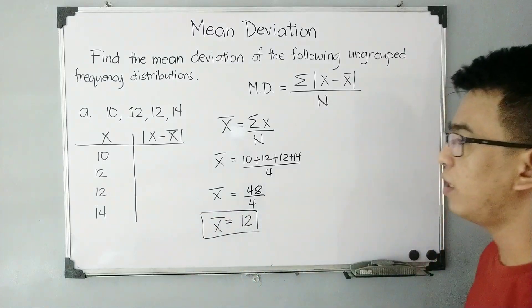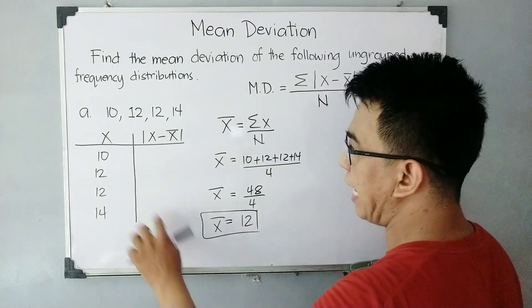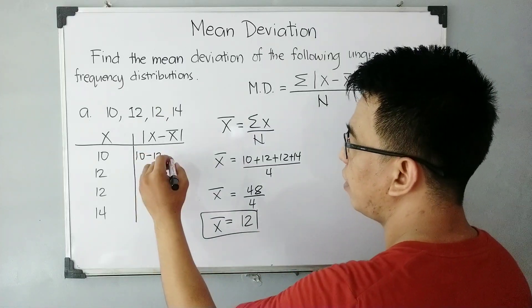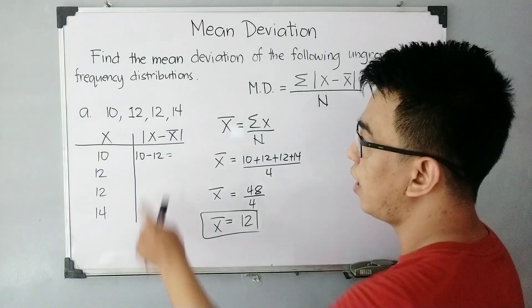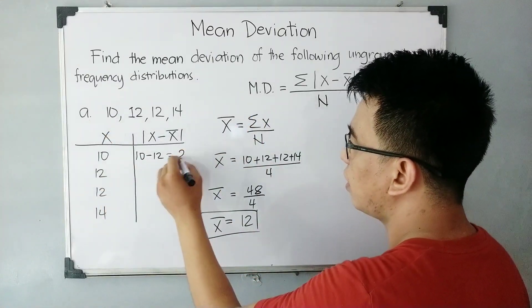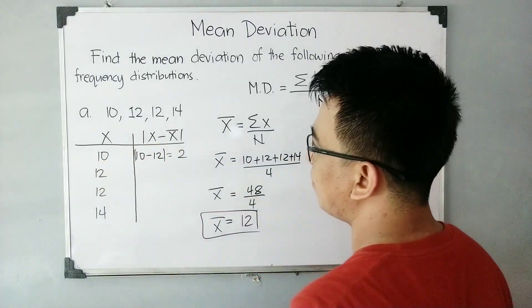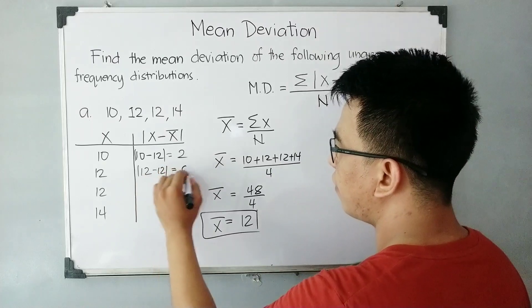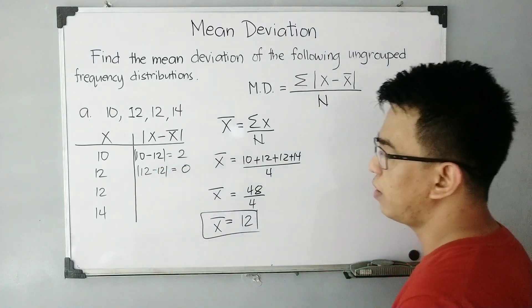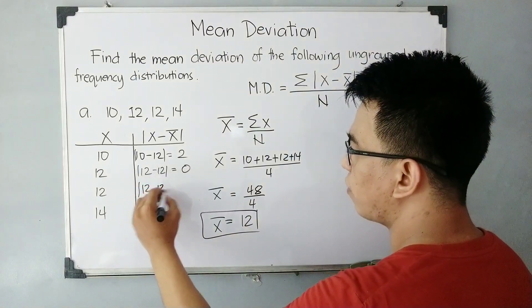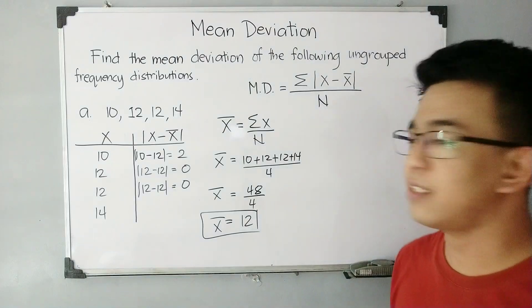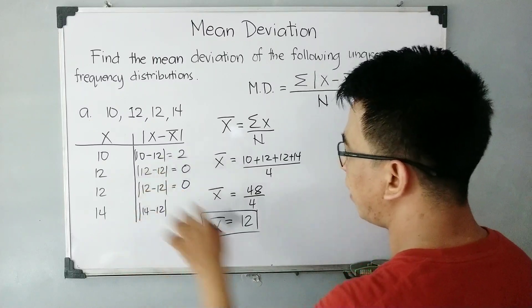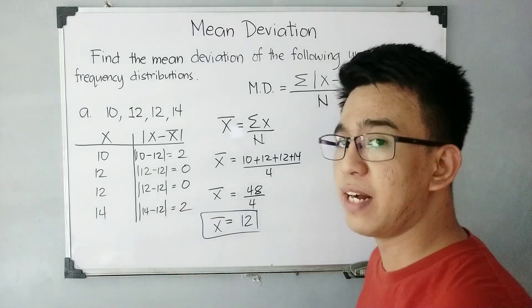Let's complete this column of the table for x minus x-bar. We have 10 minus 12, that is negative 2. But we have the absolute value, and the absolute value of negative 2 is 2. Next, the absolute value of 12 minus 12 gives us 0. Same with the next one — absolute value of 12 minus 12 is also 0. And for the last observation, 14: the absolute value of 14 minus 12 — where 12 is your mean — is equal to 2, because the absolute value of 2 is 2.